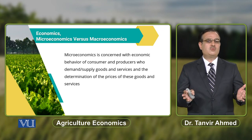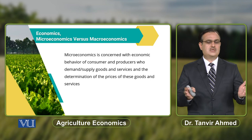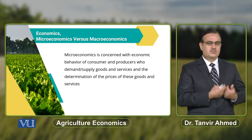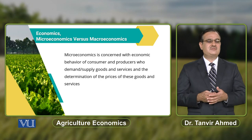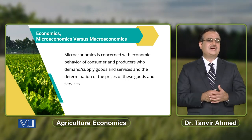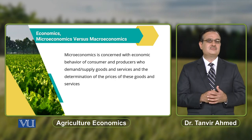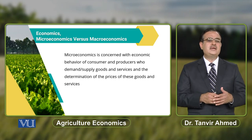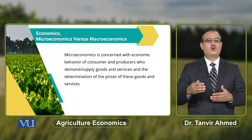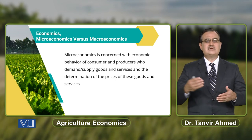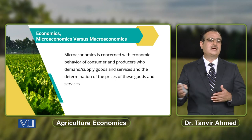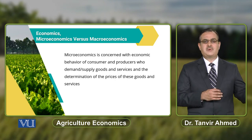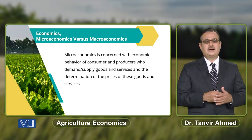The consumer has to consume goods and services and the producer has to produce goods and services. Their interaction takes place in markets. In Micro Economics, markets are usually categorized under two subheadings: one is the perfectly competitive market and the other is the imperfectly competitive market.